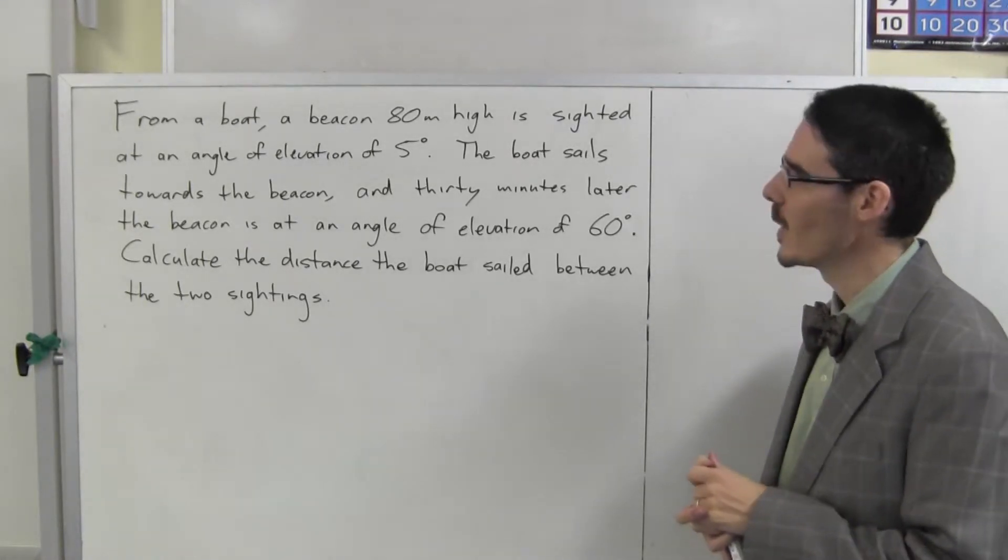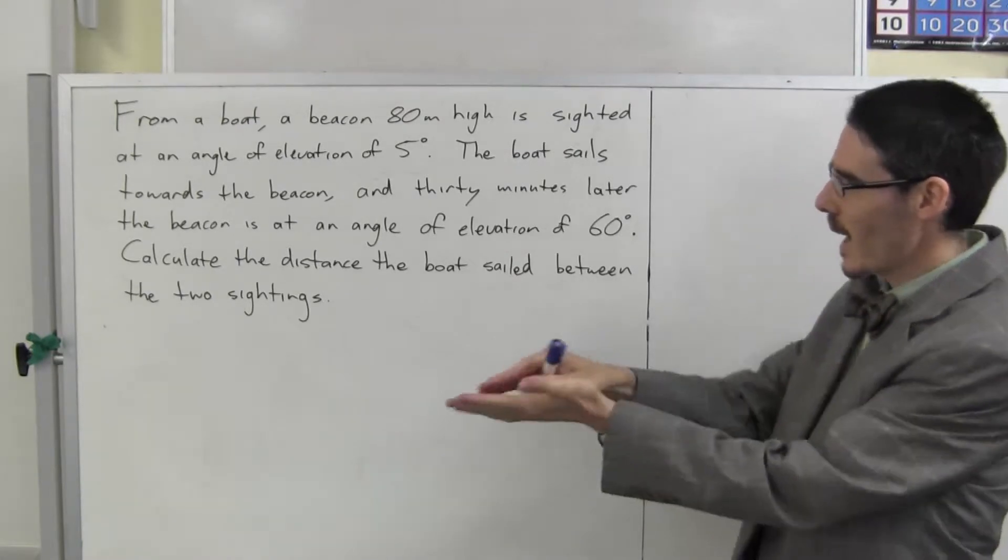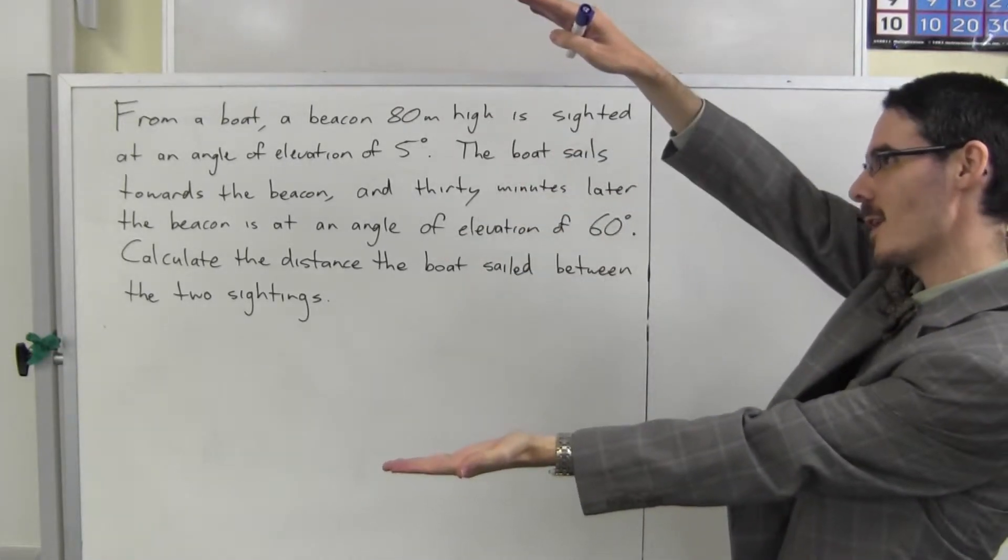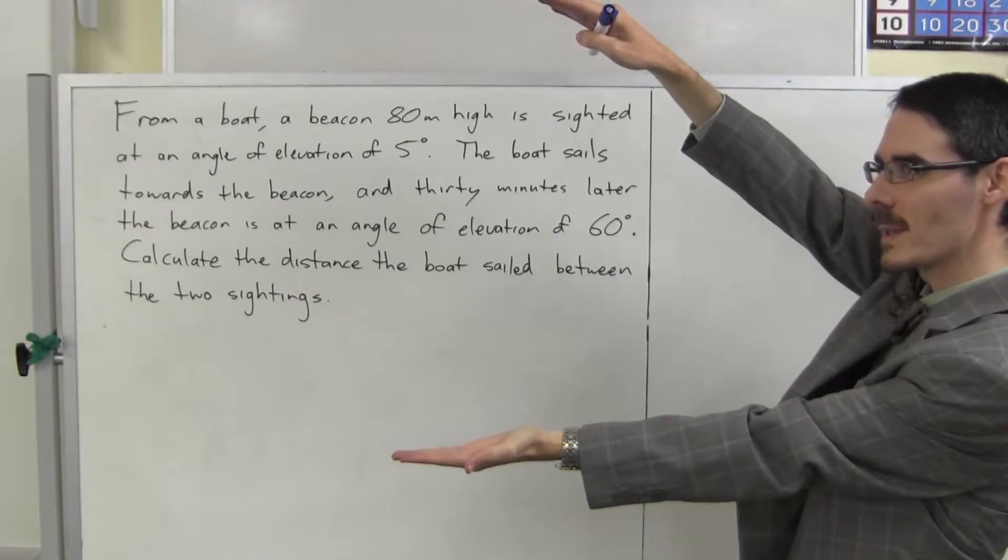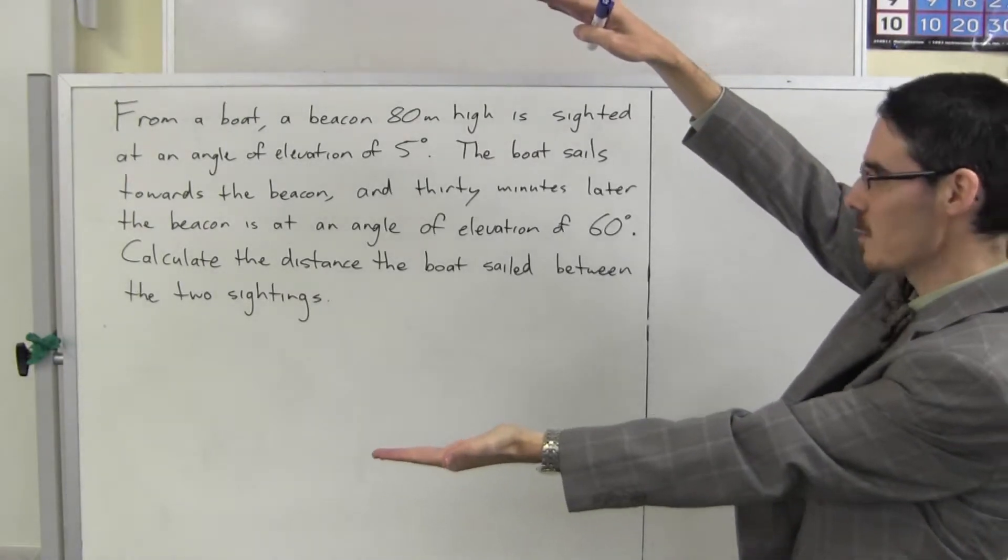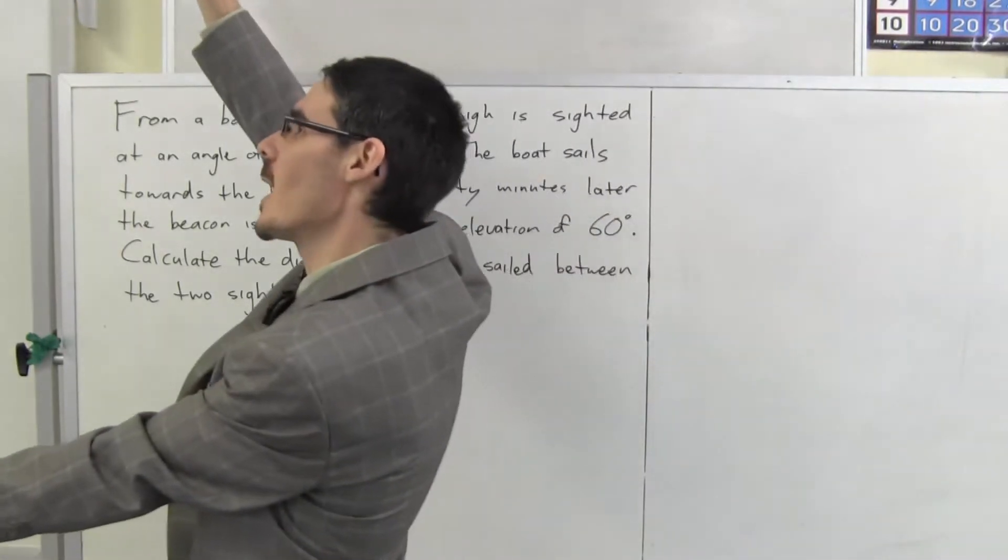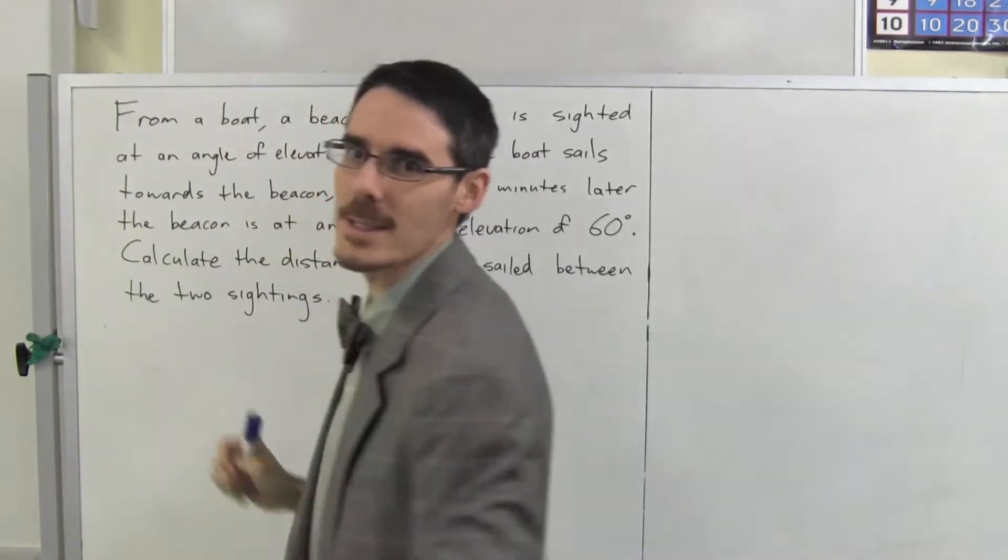Read that again carefully. From a boat, a beacon 80 metres high is sighted at an angle of elevation of 5 degrees. We sail towards the beacon and so now it's got a bigger angle, it's now 60 degrees.